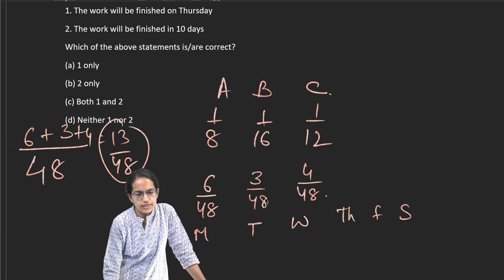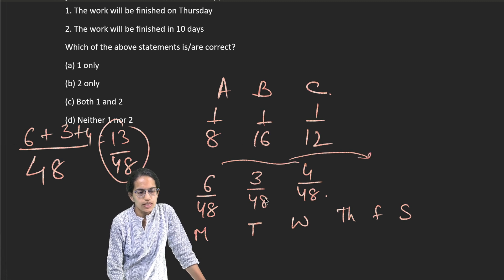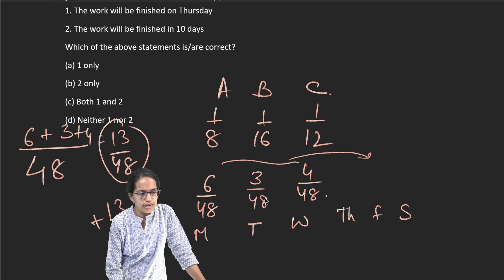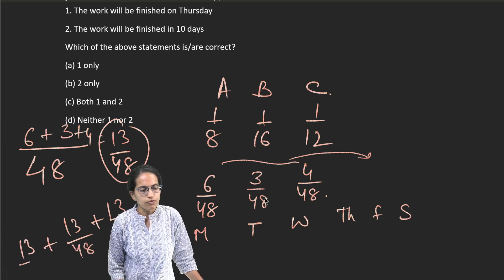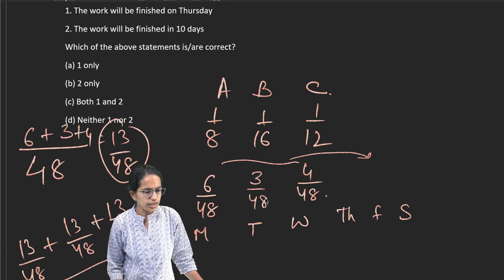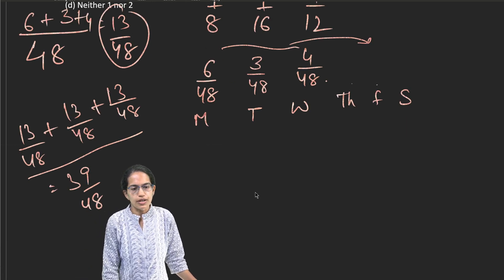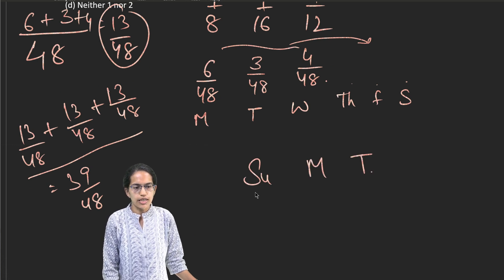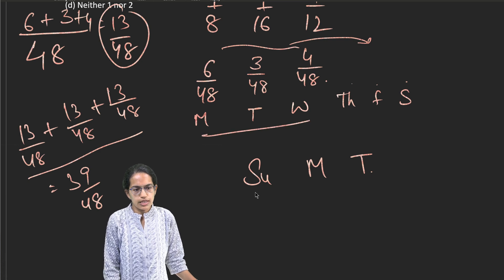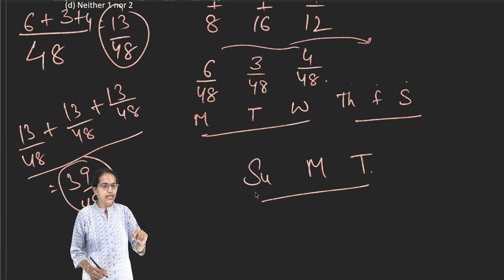Now, again, Thursday, Friday and Saturday. So again, the same things repeat here. So this is 13 by 48. I added another 13 by 48. I get 26 by 48. I have to add one more 13 by 48. That would make 39 by 48. So this would make 39 by 48.